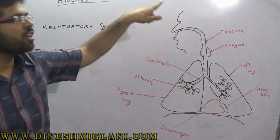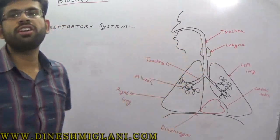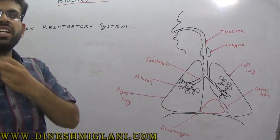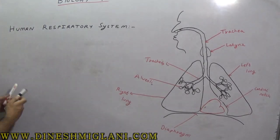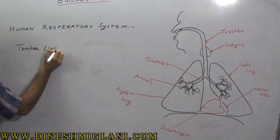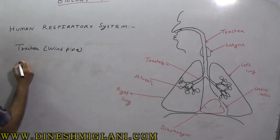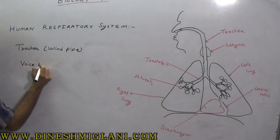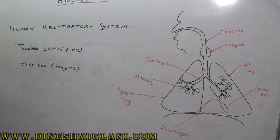The nasal passages take air to the trachea, which is known as the wind pipe. The trachea joins the nose to the lungs. Attached on top of the trachea is your voice box, or larynx.